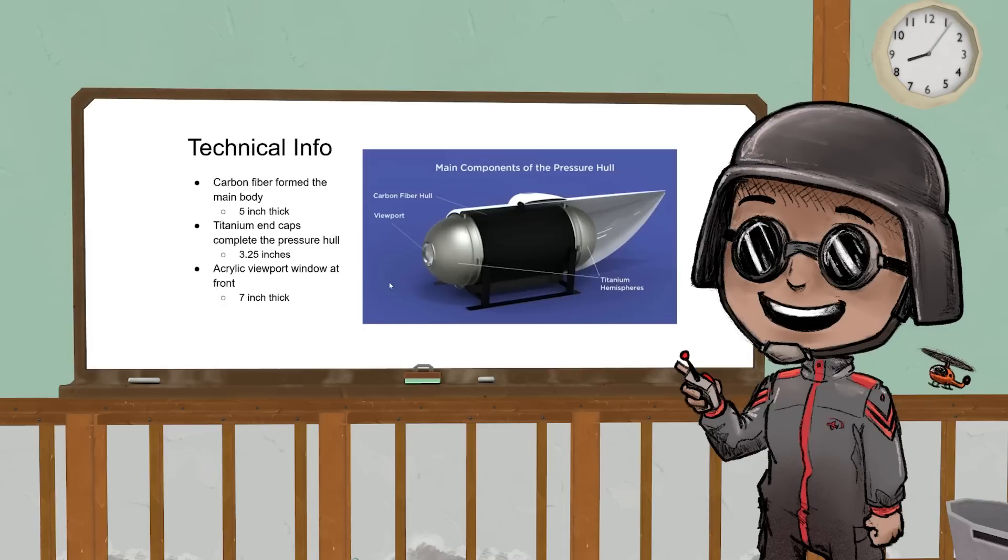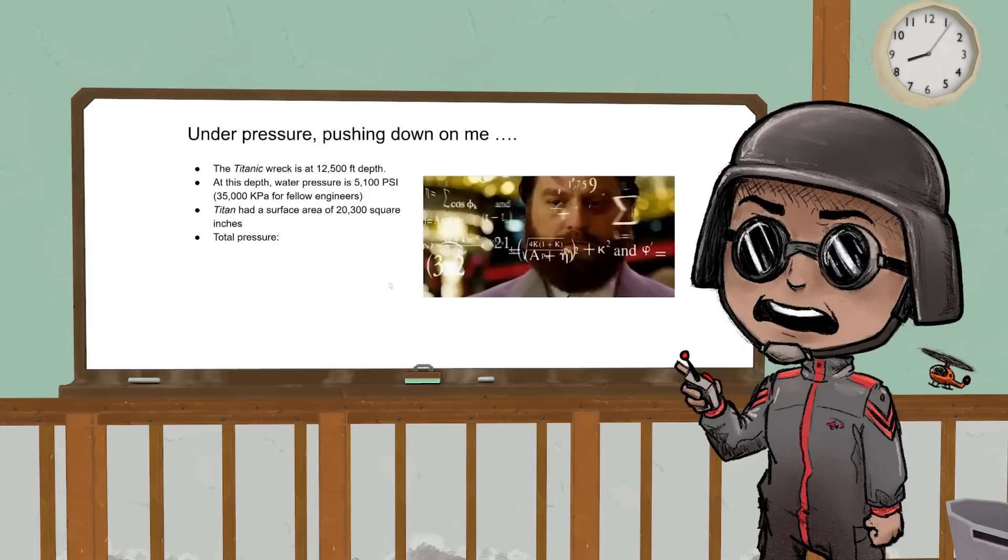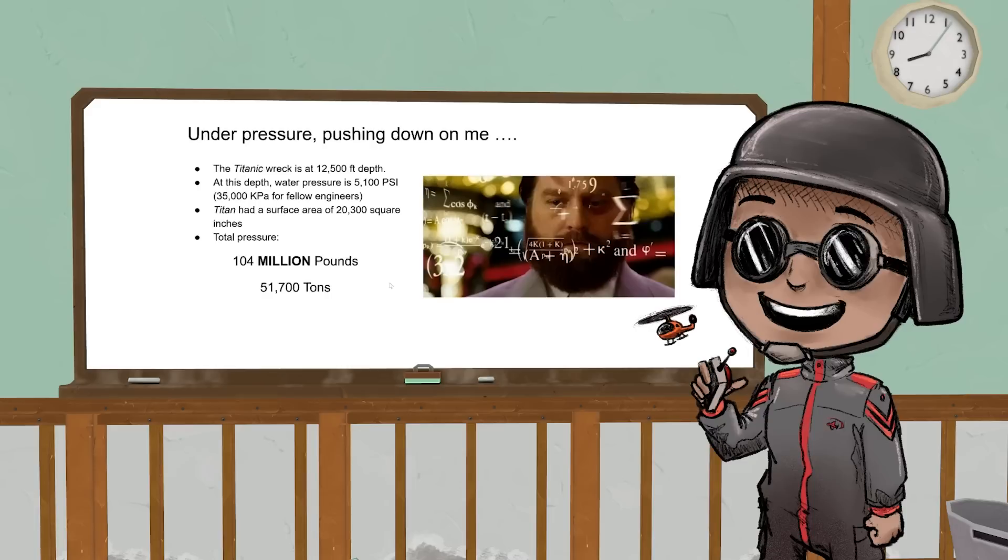The Titanic is 12,500 feet down. At that point there is 5,000 psi of pressure. The Titan has a total surface area of 20,300 square inches, which means the total force pushing in on that submarine is 51,000 tons—104 million pounds. If you want to know just how much that is, we're gonna have to bring out an old friend.